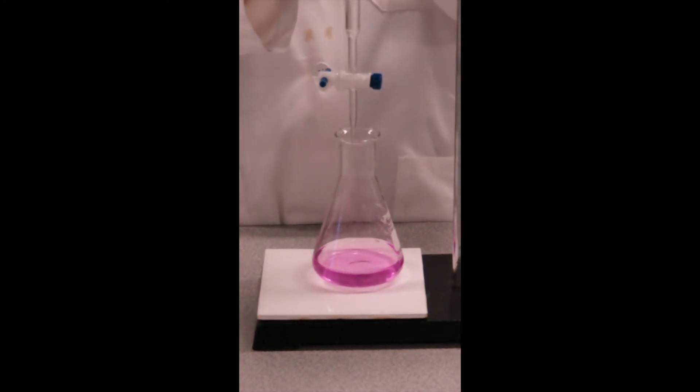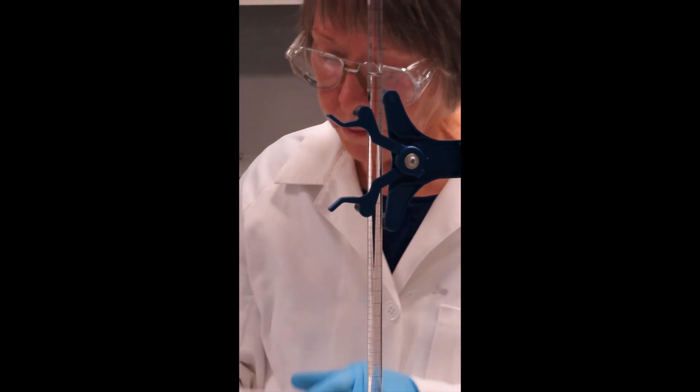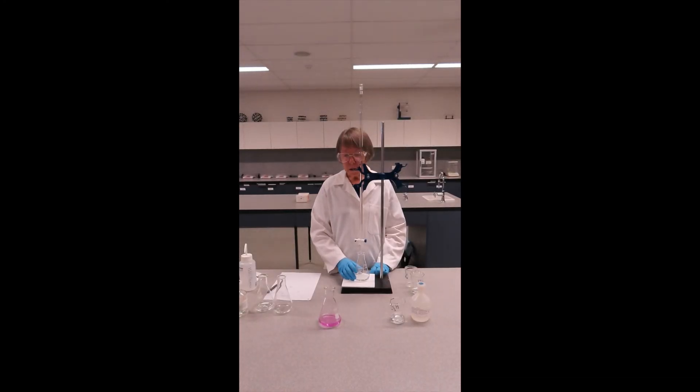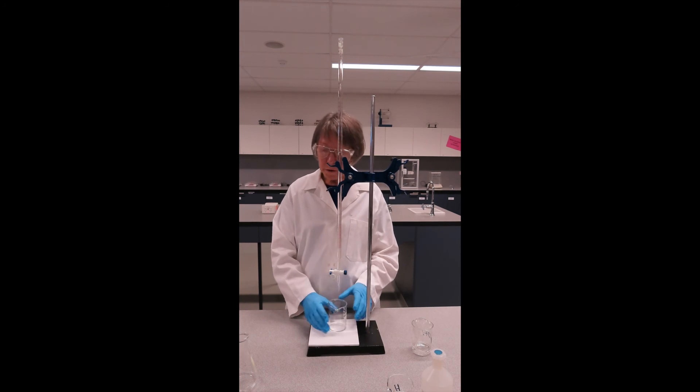Again, I take a reading. 23.21. So having done that first one gives me a pretty fair idea of where my end point should be. So in a second titration I can run the solution through much more quickly and stop when I'm close to the end point. Having done one titration I'm going to do a second.